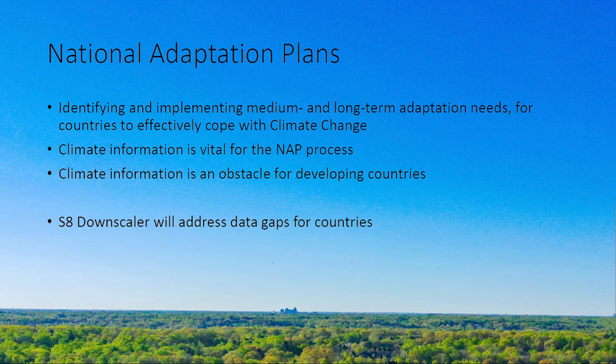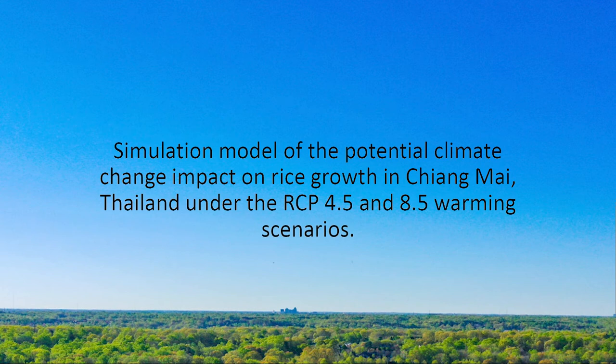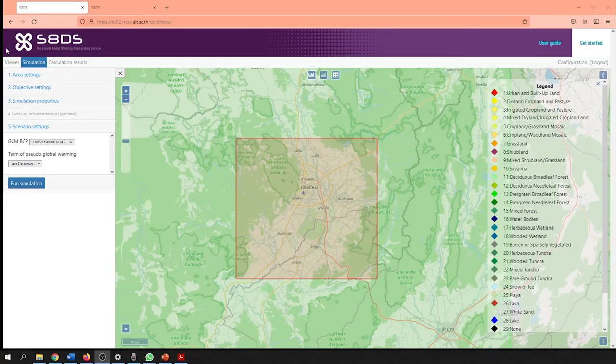The S8 downscaling tool has been developed to particularly address this obstacle of data deficiency. To see how the climate downscaling tool can be used in the formulation of national adaptation plans, I will demonstrate a simulation of the potential impact of climate change on rice growth in the city of Chiang Mai under the RCP 4.5 and RCP 8.5 scenarios for the late 21st century. First, let's start off with the simulation under the RCP 4.5 scenario.